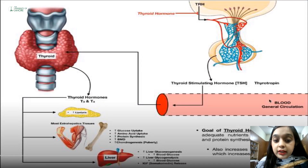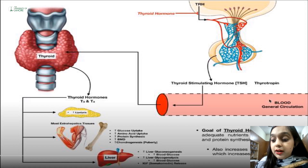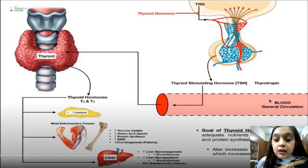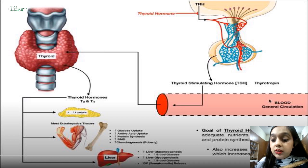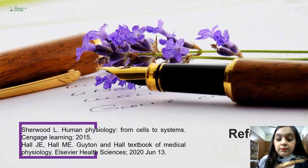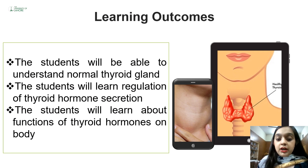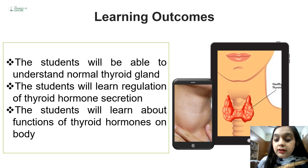In summary: thyrotropin-releasing hormone from the hypothalamus leads to the production of TSH from the anterior pituitary, which travels through the bloodstream to the thyroid gland, where it stimulates production of T3 and T4. These hormones play major roles in lipid, carbohydrate, and protein metabolism, and the basic goal of thyroid hormone is to provide adequate nutrients, energy, and synthesis to the body. The learning outcomes of this study are that a student will be able to understand normal thyroid anatomy, its structure, regulation of thyroid hormone, and its functions.